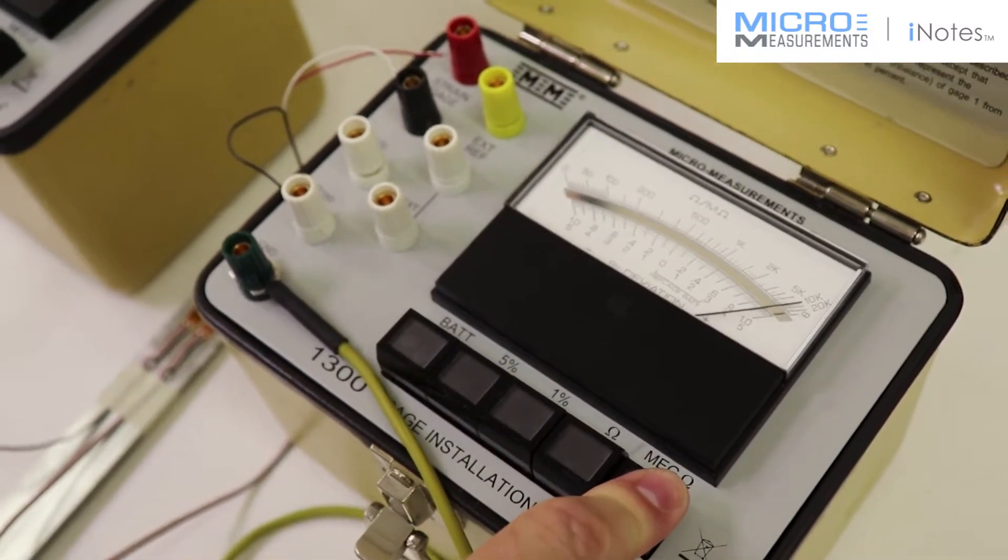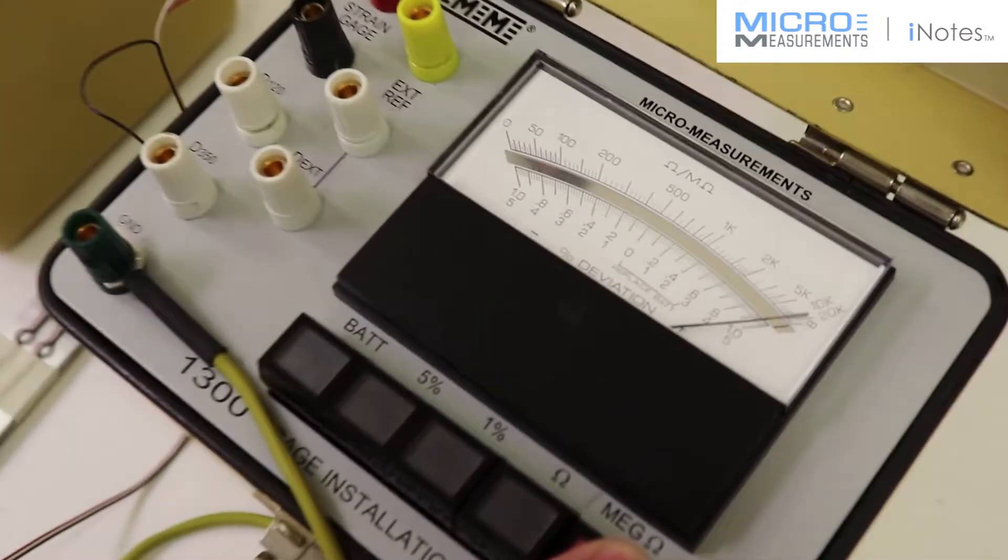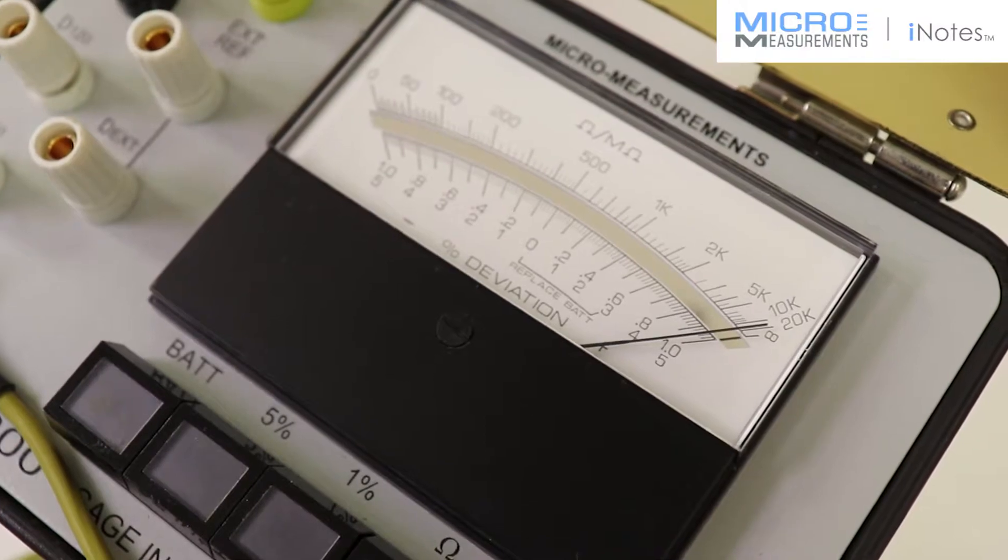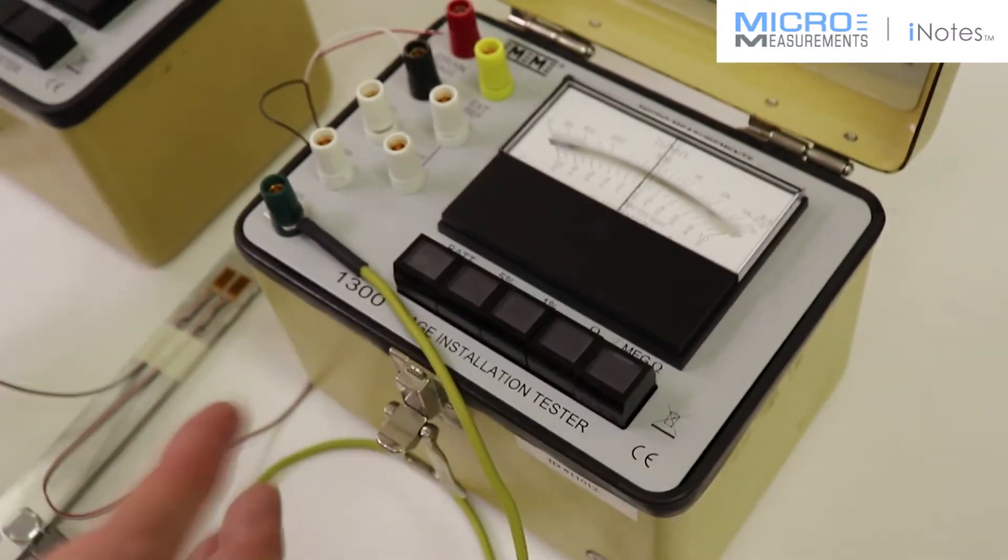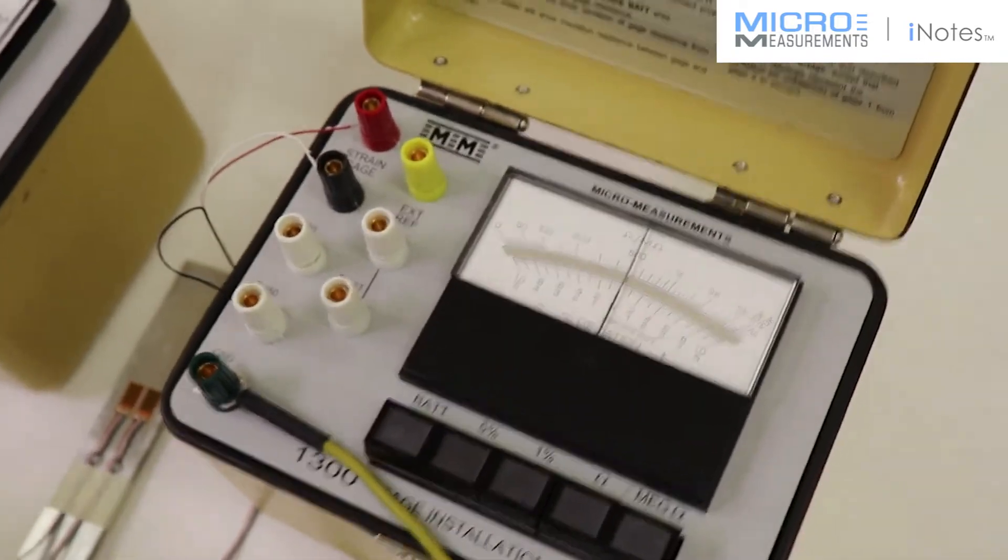And then last but not least, we look at resistance to ground and it goes full to 20,000 megaohm or 20,000 million ohms resistance. So these checks verify that both gauges are well inside of their resistance tolerances. Both have excellent resistance to ground.